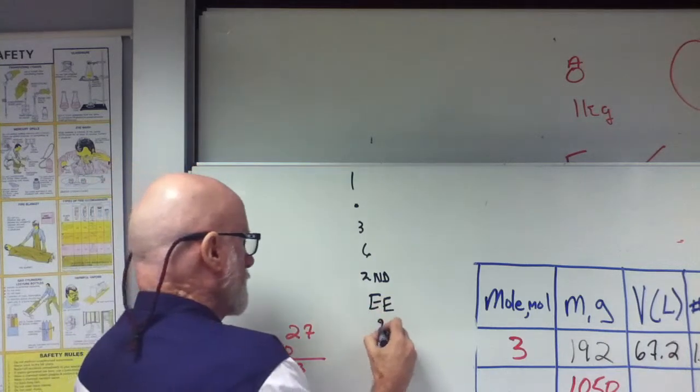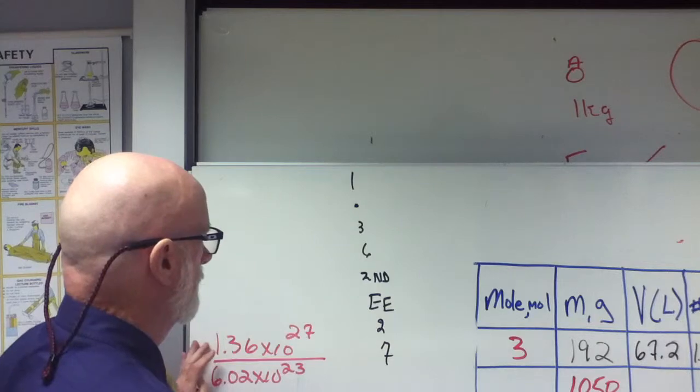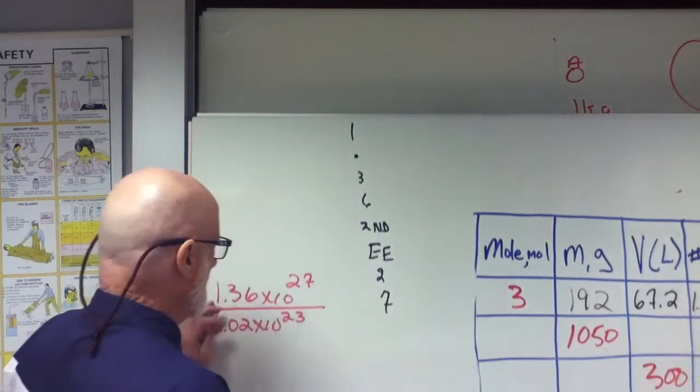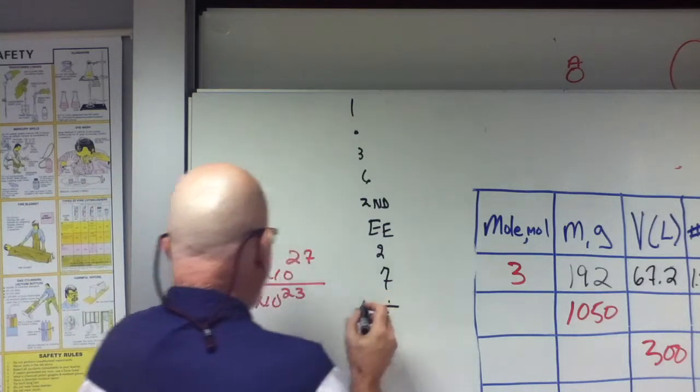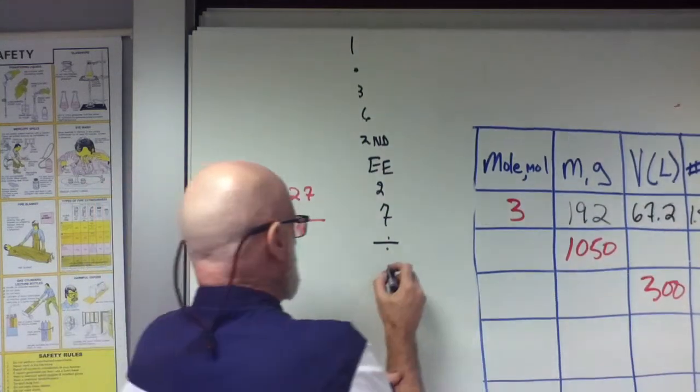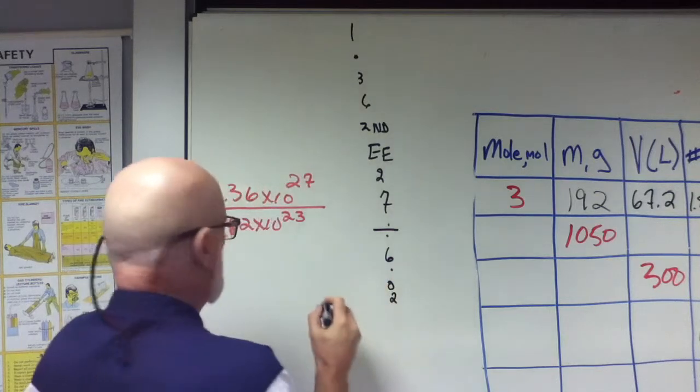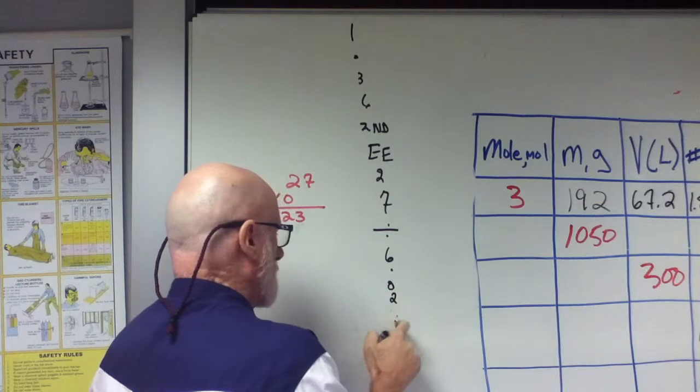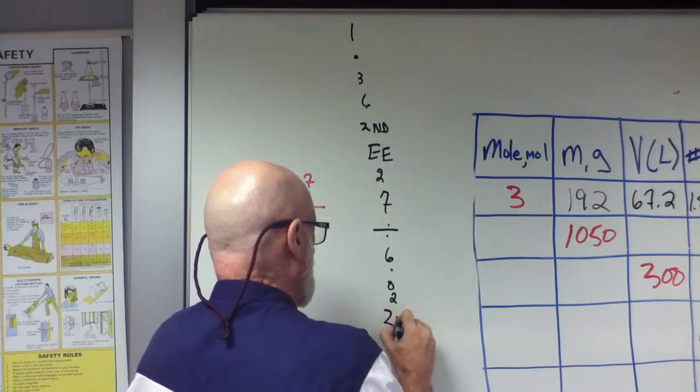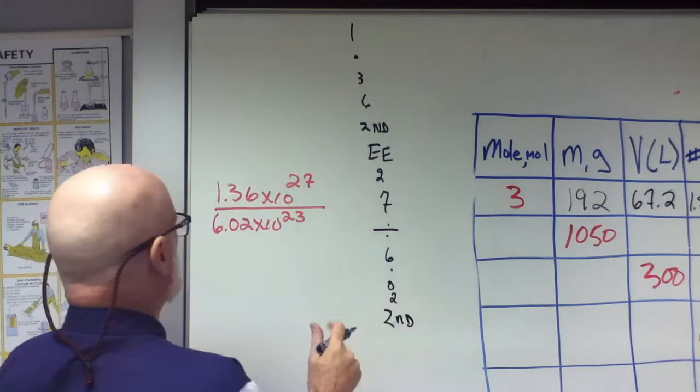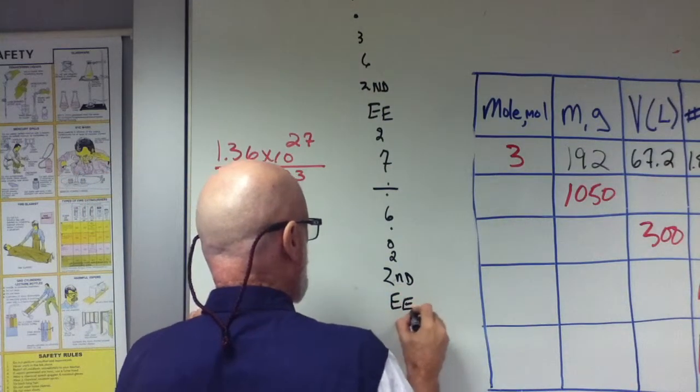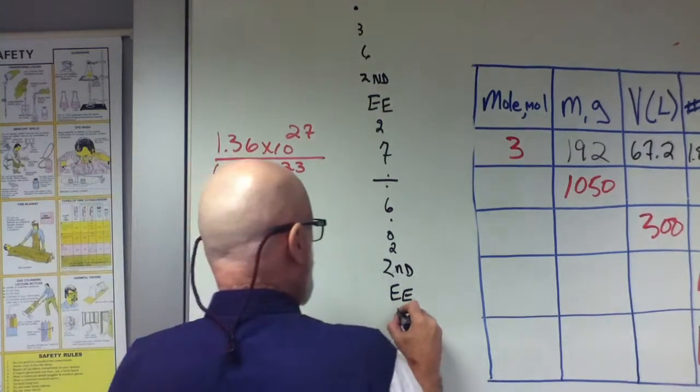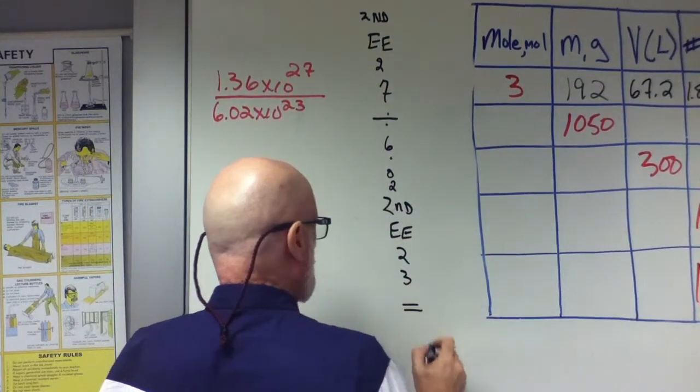Then you put in 27, divided by 6.02. Sorry, it's a 2. My apologies. EE, 23, equals.